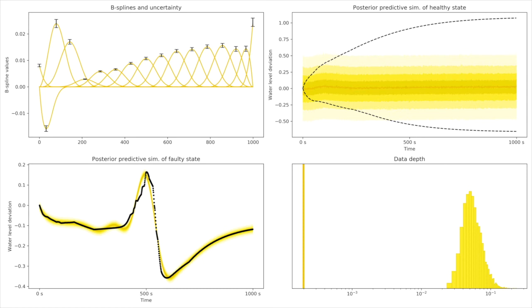In the left bottom plot, we have fit of our spline model to the state investigated for being faulty. And using the samples of B-spline coefficients for the faulty state, we've computed data depth. In a lighter shade of yellow, we have a data depth histogram for our B-spline model.